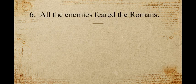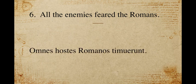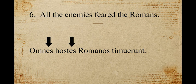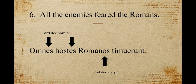Number six: 'All the enemies feared the Romans.' In Latin: 'omnes hostes Romanos timuerunt.' Omnes and hostes are both third declension. They're the subject — the thing that feared — so they have third declension nominative plural endings, both ending in -es. Romanos are second declension — that's what the enemies feared, so it's the direct object, making it second declension accusative plural.